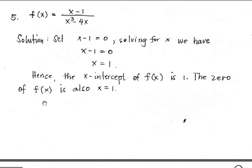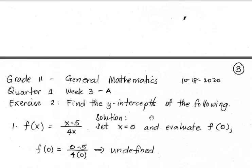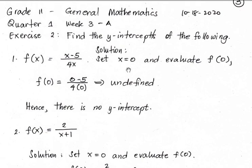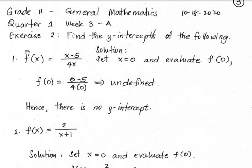For Number 1, f(0) equals (0 minus 5) all over (4 times 0). In this case, the denominator becomes 0, making the expression undefined. Hence, there is no y-intercept — meaning this function's graph will not touch the y-axis.